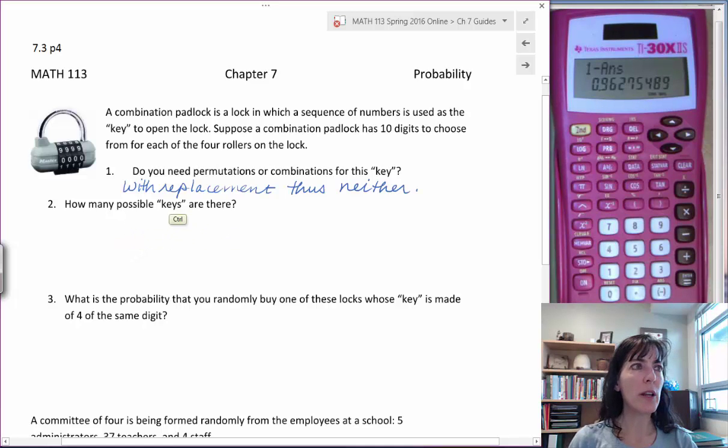So how many possible keys are there? Well, since it's with replacement, we can think for each of the rollers. For the first roller, we have 10 possibilities. Second roller, 10. Third roller, 10. Fourth roller, 10 as well.